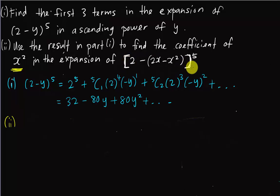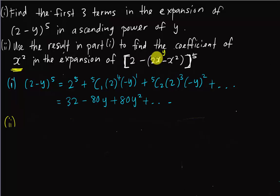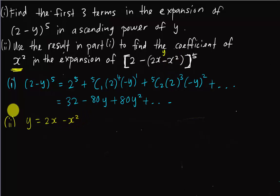To find the x² coefficient, you need to see the pattern between part 1 and part 2. In part 2 we have (2 - (2x - x²))^5. If you assume the bracket (2x - x²) is y, then it becomes (2 - y)^5 — exactly the same as part 1. So we let y = 2x - x², and substitute into the part 1 expansion.